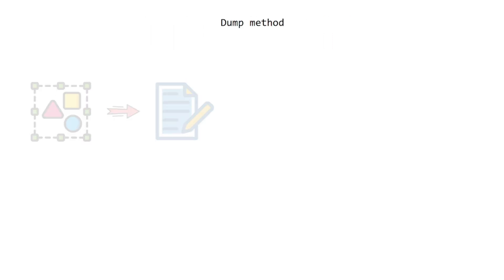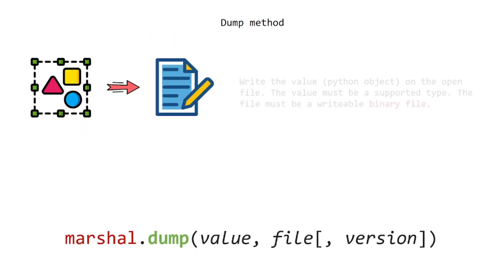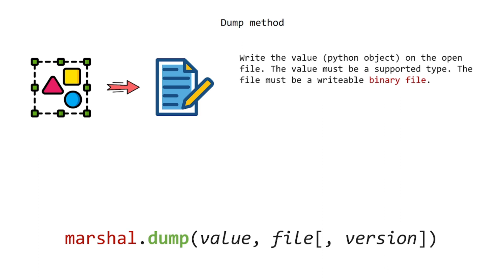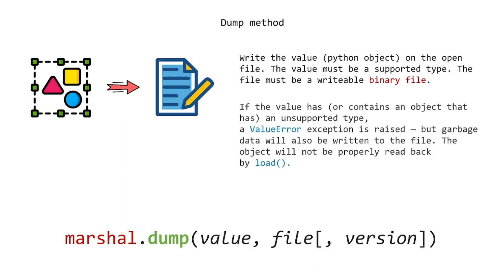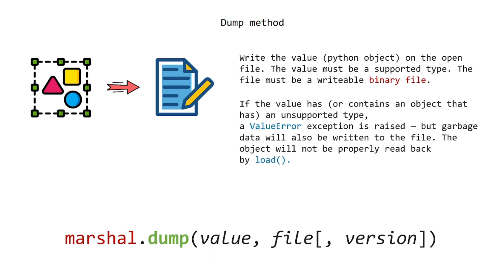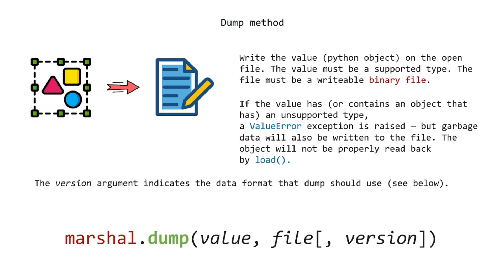The dump method writes the value to the open file. The value must be a supported type, and the file must be a writable binary file. If the value has an unsupported type, a ValueError exception is raised, but garbage data will also be written to the file. The object will not be properly read back by load. The version argument indicates the data format that dump should use.